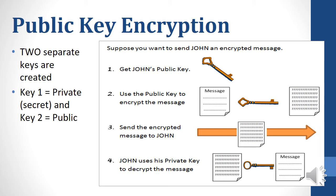In public key encryption, there are two separate keys. Key one is a private key, which is never sent over the channel, and key two is a public key. Suppose you want to send John an encrypted message — John sends you his public key, you use it to encrypt the message, and then send the encrypted message to John. John then uses his own private key, which he never sent you, to decrypt the message. Only that key can open the message; the public key cannot. This is very secure because anyone eavesdropping on the channel would never get the private key and therefore not be able to open the message.